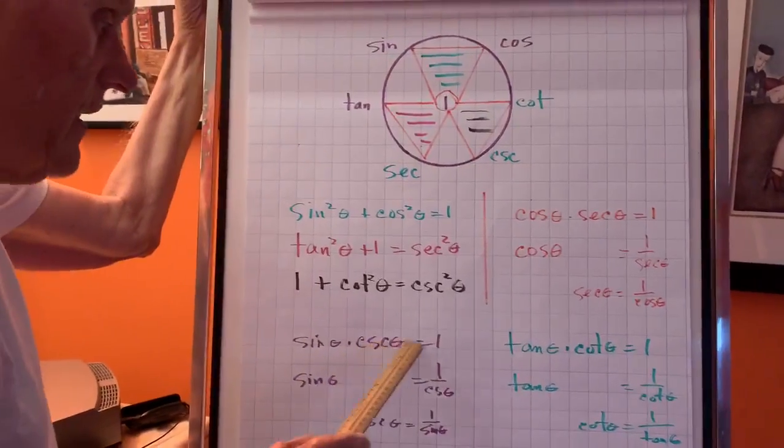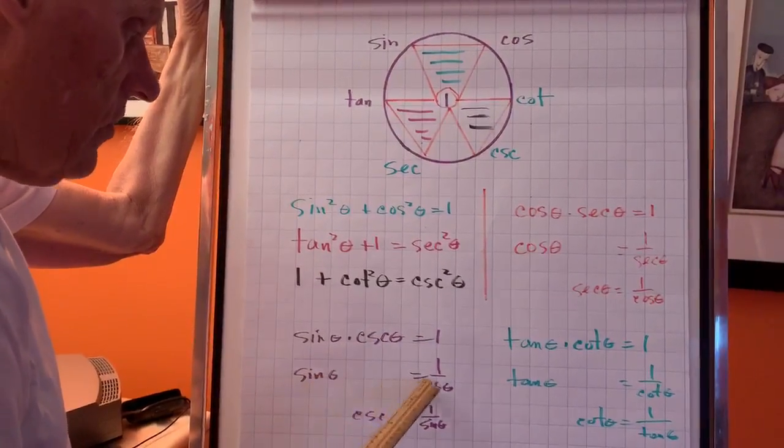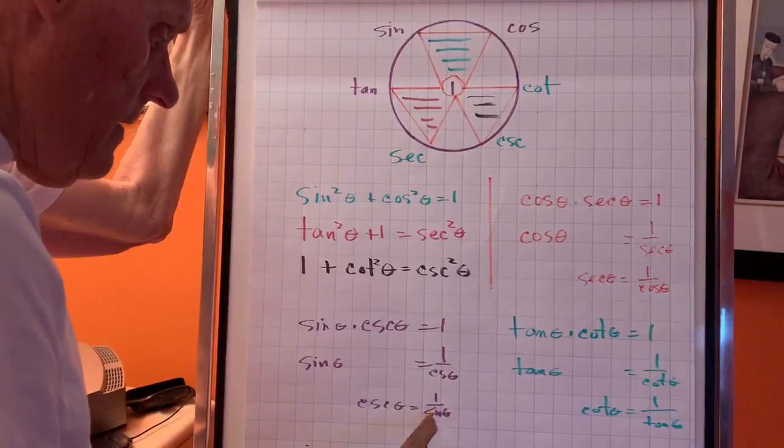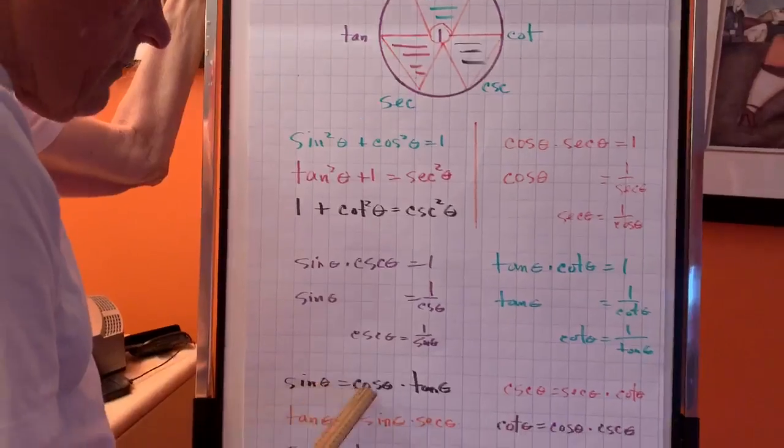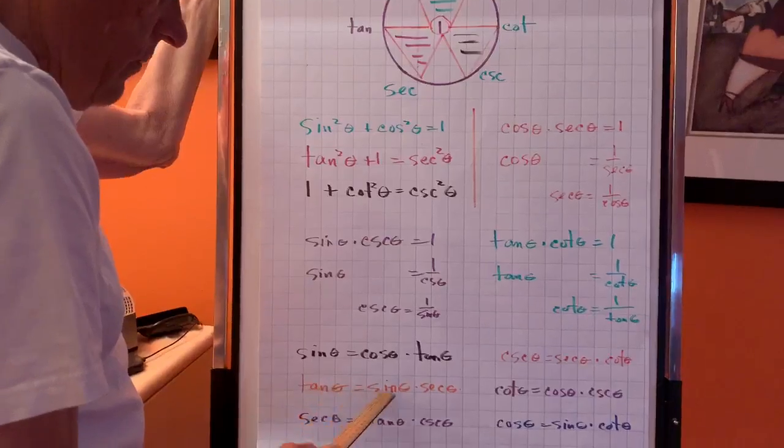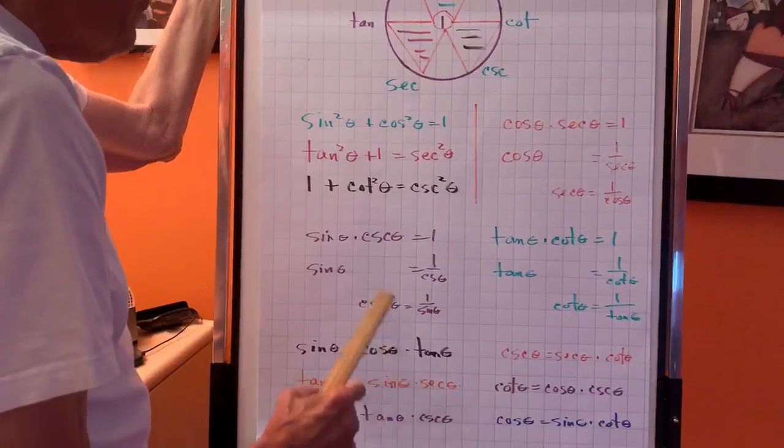Sine times cosecant is one, so sine is equal to one over cosecant. Cosecant is one over sine. Sine is equal to cosine times tan. And tan is equal to sine times cosecant. If you go back up here, let's go back over here.